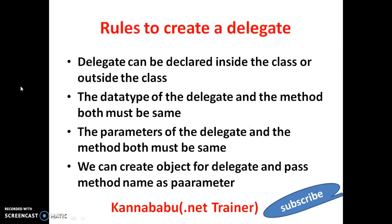Delegates are also used to avoid overloading. What are the rules to create a delegate? Rule number one: a delegate can be declared inside the class or outside the class. The data type of the delegate and the data type of the method both must be same. The parameters of the delegate and the parameters of the method both must be same. We can create an object for the delegate and pass the method name as parameter to the delegate object.